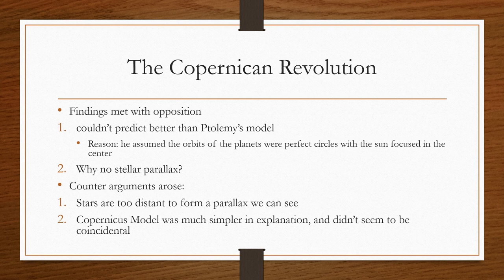The other reason was because there was no stellar parallax. Counterarguments arose. Stars too distant to form a parallax that we can see. Copernicus' model was a much simpler explanation and didn't seem to just occur on coincidence. A stellar parallax is seeing how stars move. The counterargument was, they're so far away, how are we supposed to see a parallax? And the other thing was, even though it couldn't predict better than Ptolemy's model, it was much simpler and it did not seem to be a coincidence.